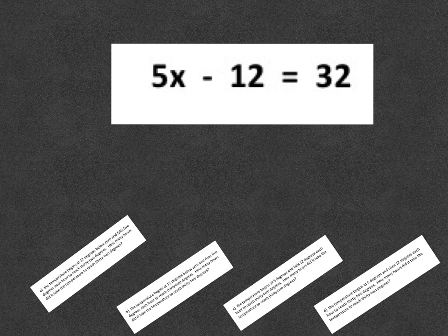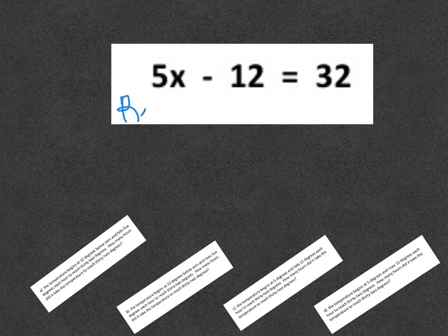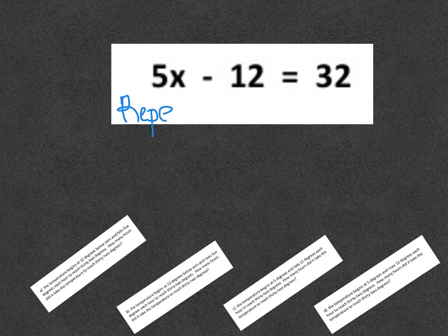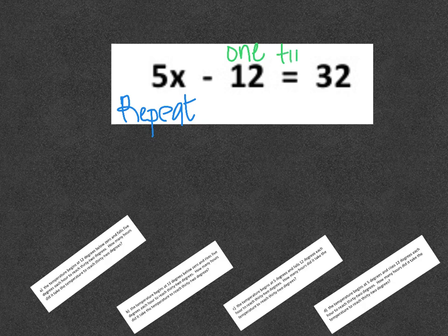When you look at this, the number that's being multiplied or repeated a whole bunch is your 5x. And then 12 is going to be the number that only happens one time. It could also be a starting amount.